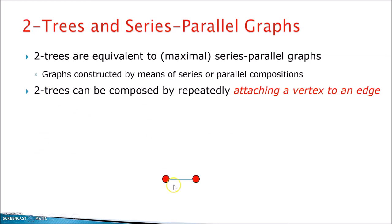So in fact, 2-trees are composed as follows. You start from an edge, and then every time you attach a new vertex to an edge. Attaching a vertex to an edge means adding a new vertex and connecting to the two end vertices of the edge. This you can do many times on the same edge, as many times as you like, and you can do also on other edges.